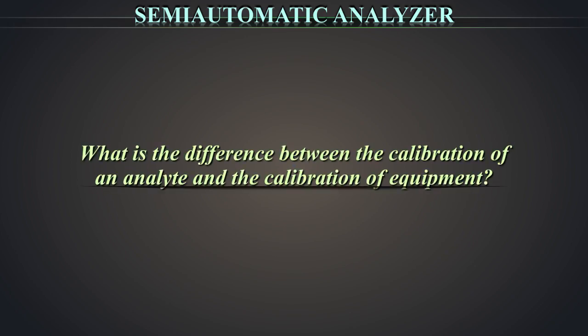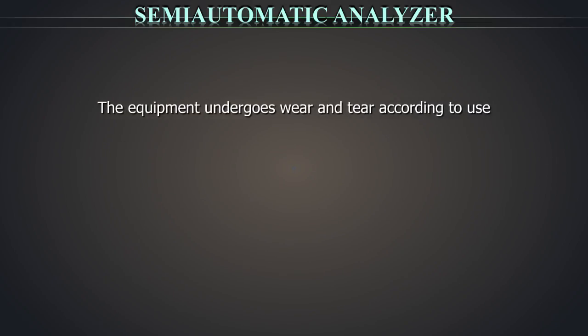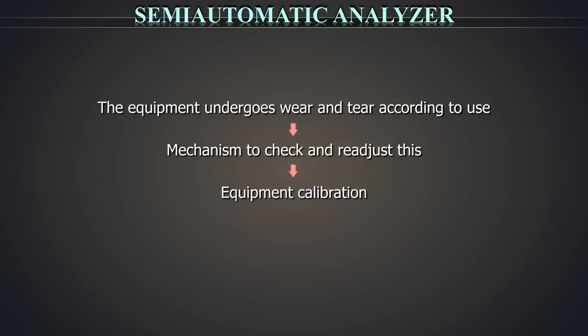What is the difference between the calibration of an analyte and the calibration of equipment? What we were talking about so far was about calibrating an analyte. The equipment also undergoes wear and tear according to the use. So there has to be a mechanism to check and readjust this. This is called an equipment calibration.